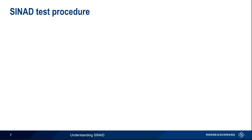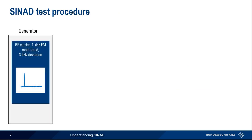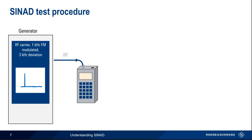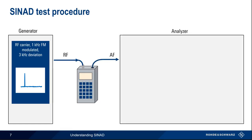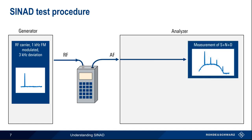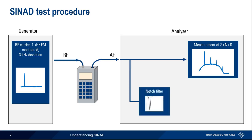Let's walk through the SYNAD test setup for an FM receiver. Our radio frequency signal generator is configured to produce a carrier modulated with a 1000 Hz tone and 3 kHz deviation. The generator frequency is set to match the received frequency on the radio under test. The audio output of the receiver is passed to the analyzer, which makes two measurements. One of these measurements is the unaltered audio output, which consists of signal, noise, and distortion. The output signal is also passed through a notch filter in order to remove the original signal component. Note that the notch filter characteristics will affect the measurement.